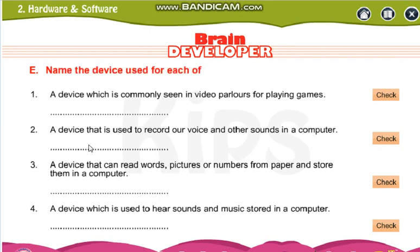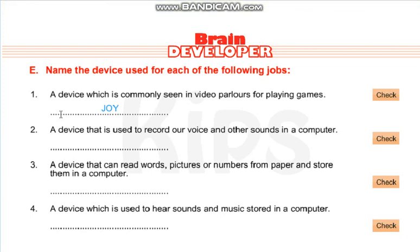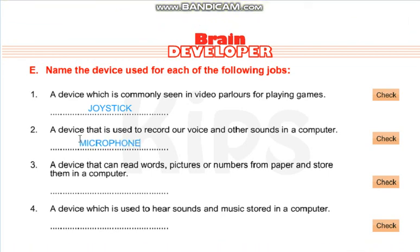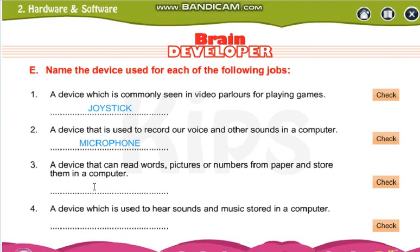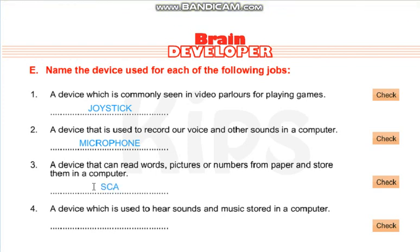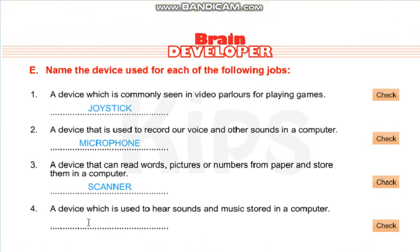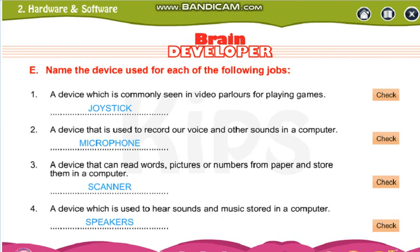Now name the device. A device commonly seen in video parlors for playing games — it's joystick. A device used to record our voice and other sounds in a computer — microphone. A device that can read words, pictures, or numbers from paper and store them in a computer — scanner. The device used to hear sound, like you are hearing sound through — speakers. Write down these spellings correctly. You can pause the video for writing if you are not able to complete it now.